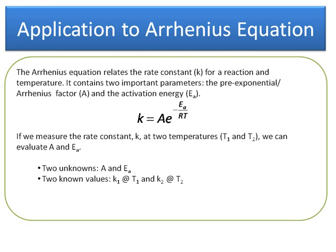So if we measure the rate constant K at two temperatures, T1 and T2, we can evaluate both of these unknowns, A and Ea.